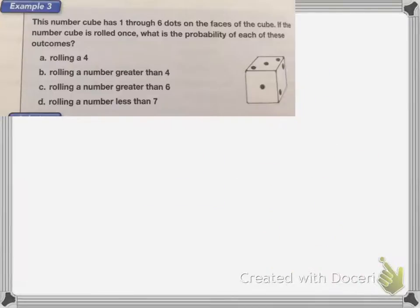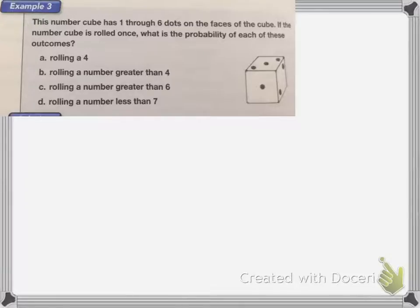The second part is on probability. Probability is figuring out what is the likelihood a particular event will occur. Here I have a dice with dots one through six on it, and I want to know what the probability is of rolling a four. How many fours are on a dice? Well, there's only one.